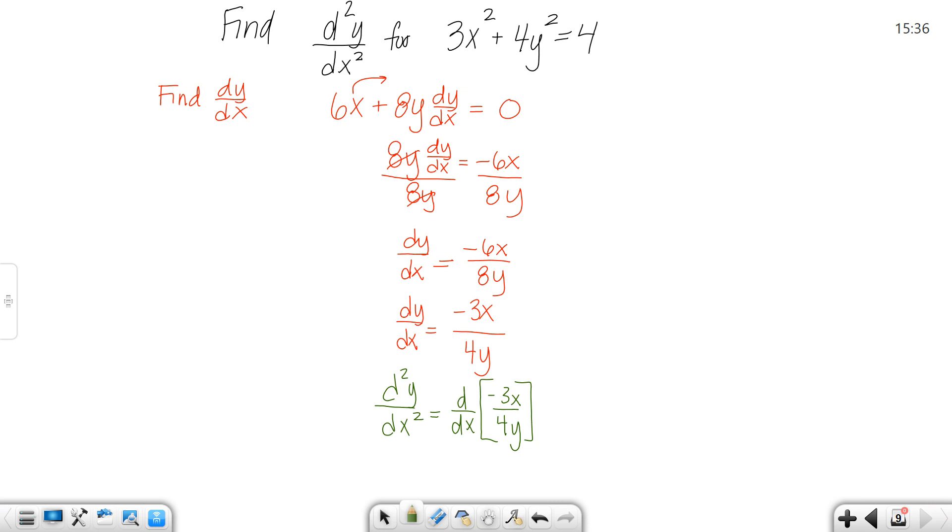Now when we do the green step, that means we're going to have to use the quotient rule. So the second derivative would equal low d high minus high d low, all over low squared.